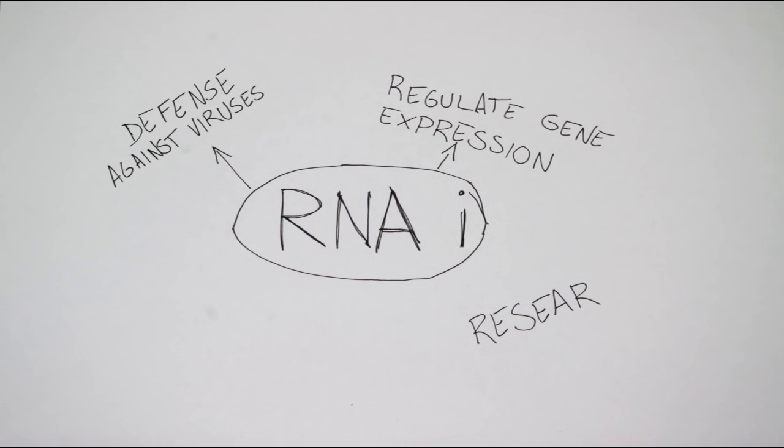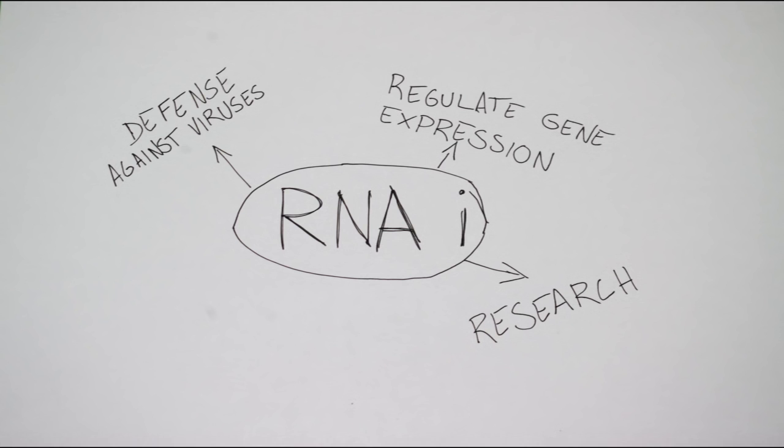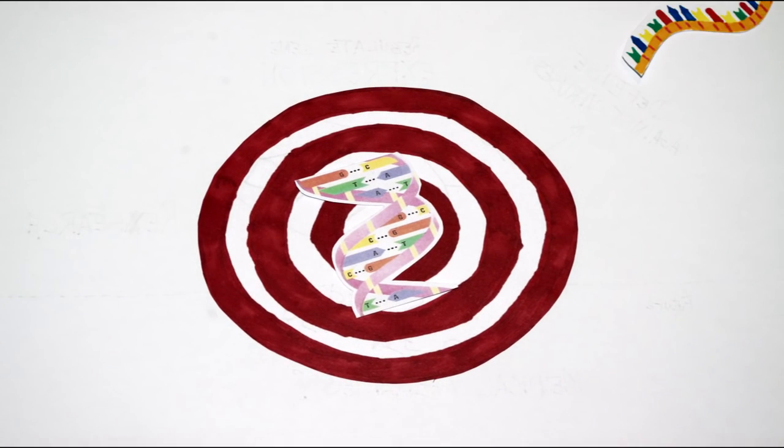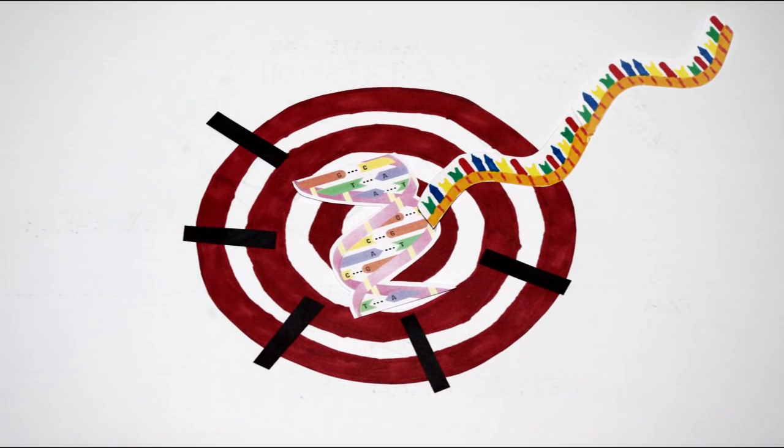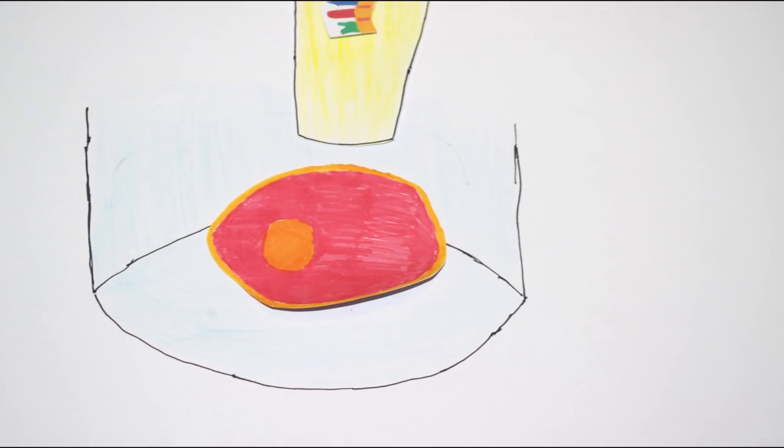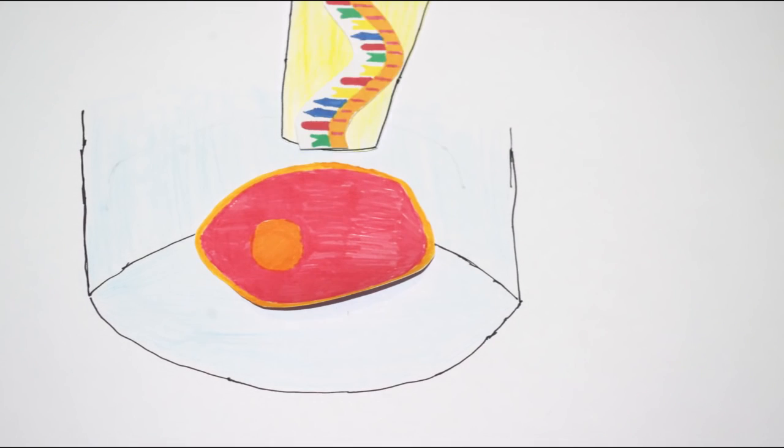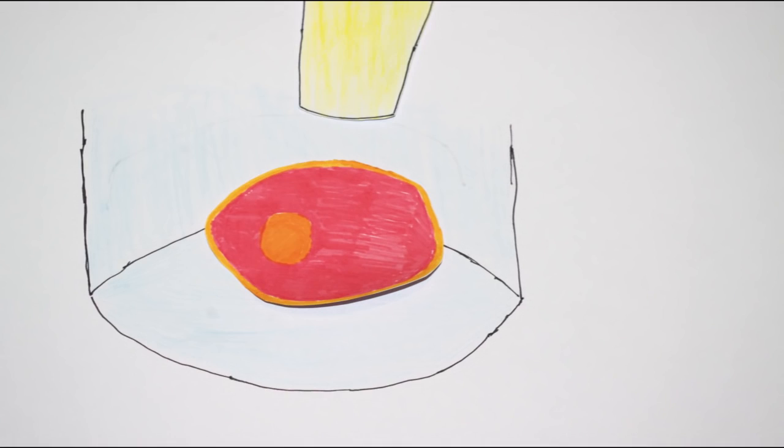These are examples of how RNA interference happens in nature, but one of the greatest implications of this discovery is in the field of biomedical research. Its targeted action can be used to study the functions of essentially any gene. Researchers only have to introduce in the cell pieces of RNA matching the mRNA that corresponds to the genes they want to study, and then they can watch and record the effects.